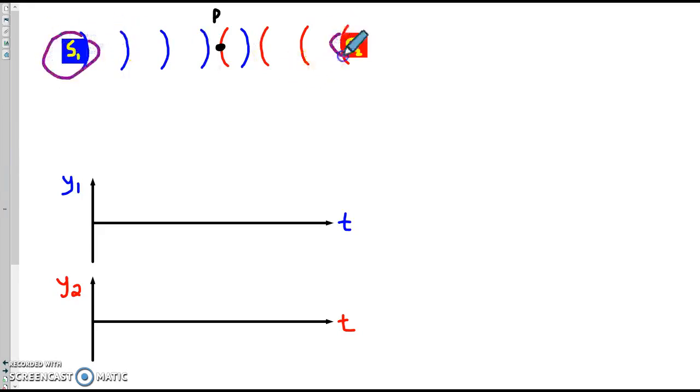Here are two sources of waves, S1 and S2. They are emitting crests and troughs, and this crest is emitted at the same time as this one. So they emit waves in phase.